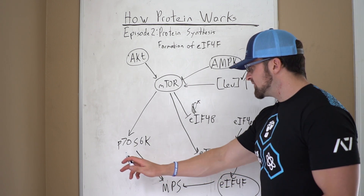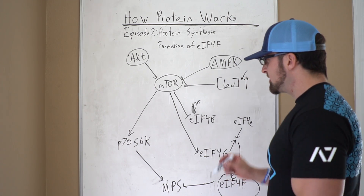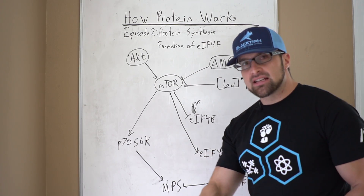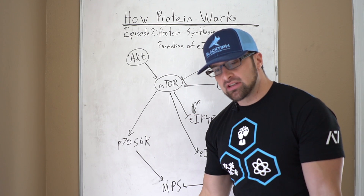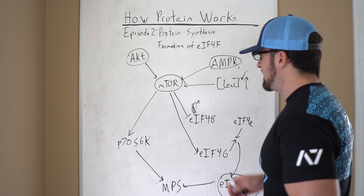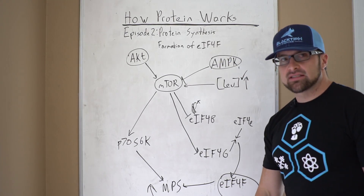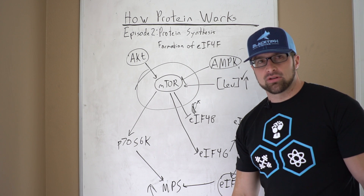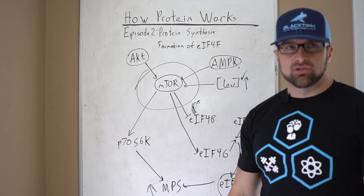mTOR also specifically activates the ribosomal protein P70S6K. P70S6K actually increases the production of specific proteins involved in the process of muscle protein synthesis. So not only are you getting increased muscle protein synthesis, you're getting increased capacity for muscle protein synthesis by activating this protein. All of these things lead to increased muscle protein synthesis, but it was all triggered by things that happened at the mTOR step. Leucine seems to be the most potent nutritional regulator of mTOR.